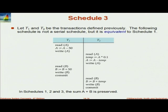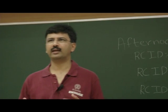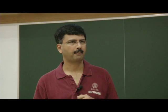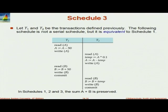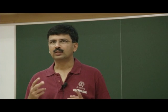If two instructions don't conflict, you can swap them — pretend one happened later and the other happened earlier. You can move read B above write A, and bring it up; similarly write B can move above write A and come to the top. What you end up with is a serial schedule where T1 runs first and then T2. So the two schedules are essentially equivalent — a series of swaps, each of which preserves equivalence because the swapped instructions don't affect each other.